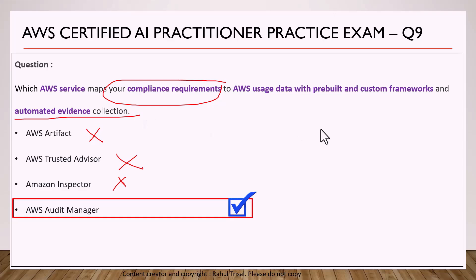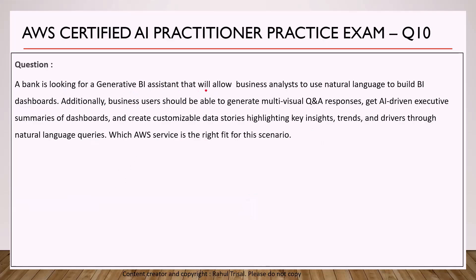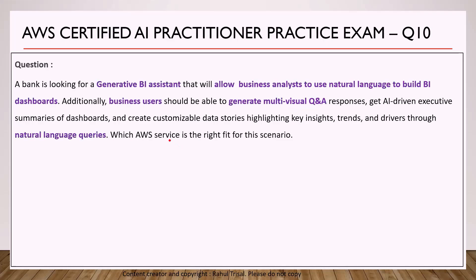Now let's take a look at the last question. A bank is looking for a generative BI assistant that will allow business analysts to use natural language to build BI dashboards. Additionally, business users should be able to generate multi-visual Q&A responses and get AI-driven executive summaries of dashboards, and create customizable data stories highlighting key insights, trends, and drivers through natural language queries. Which AWS service is the right fit for this scenario? The key terms are generative BI assistant, natural language queries, BI dashboards, and multi-visual Q&A responses.